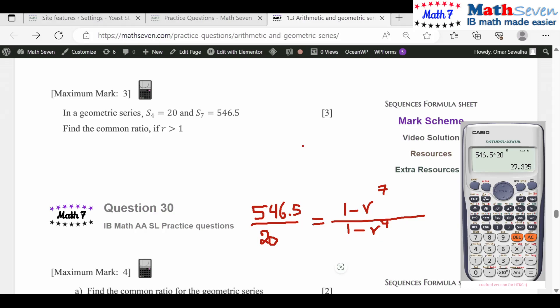So 1093 over 40 equals (1 - r^7)/(1 - r^4). Cross multiply to make it look clear.